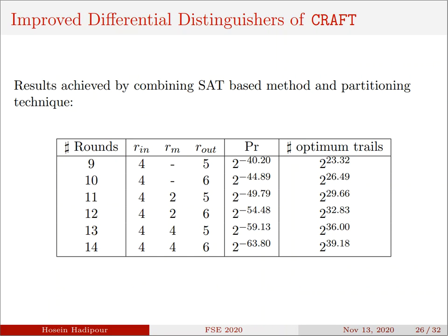Thanks to the combination of partitioning technique and automatic method based on SAT, we could significantly improve the single-tweak differential distinguishers of CRAFT. For example, as you can see in this table, we concatenated three smaller parts of lengths 4, 4, and 6, as first, middle, and last parts respectively to provide a 14-round distinguisher.